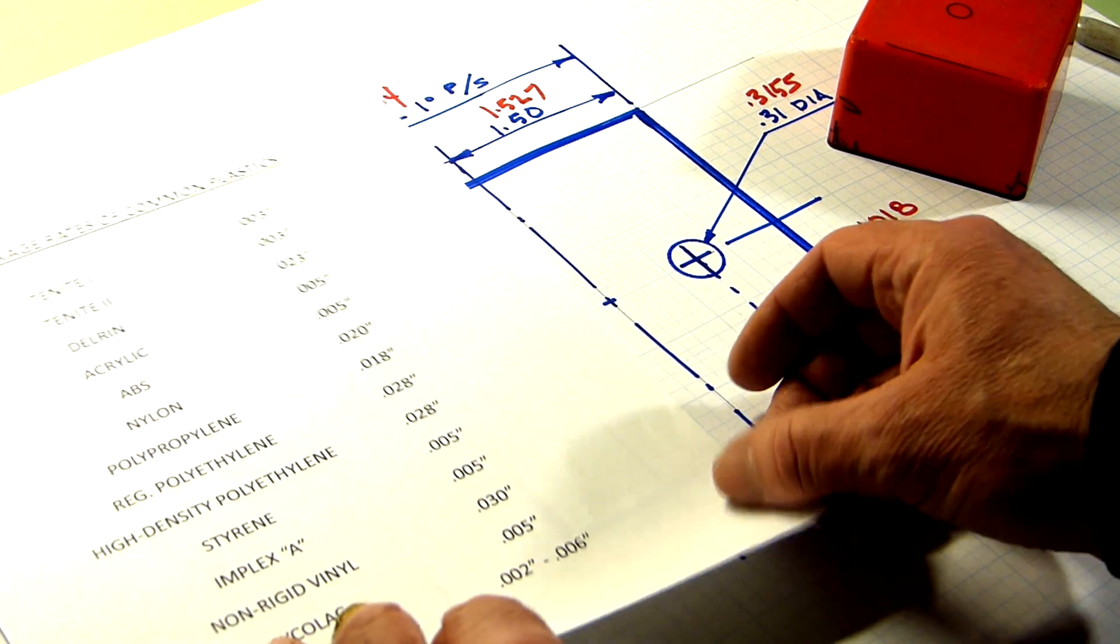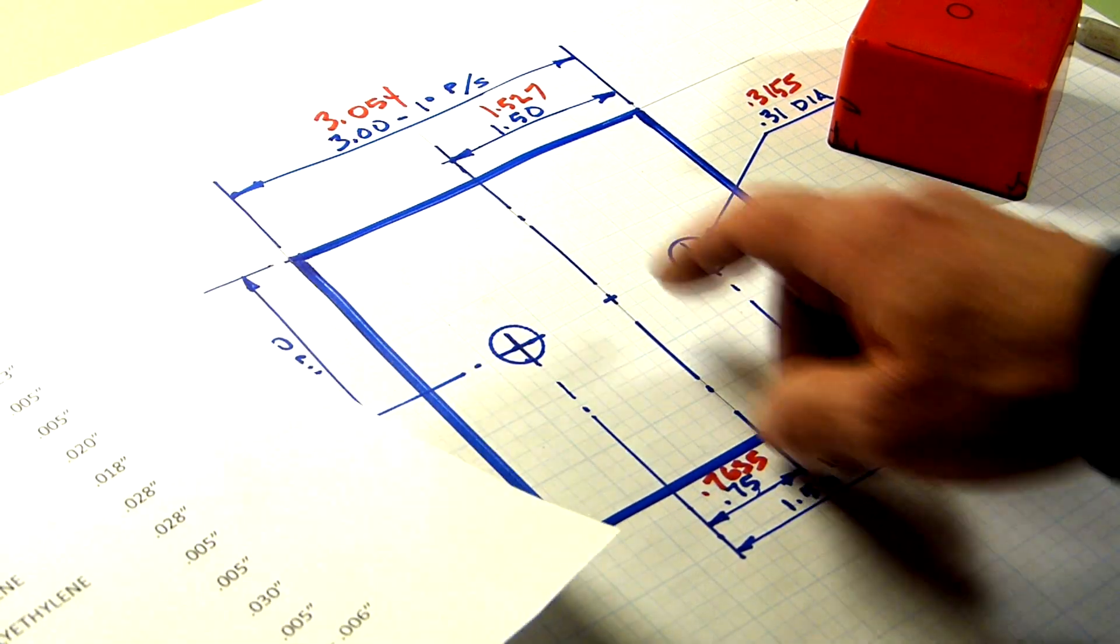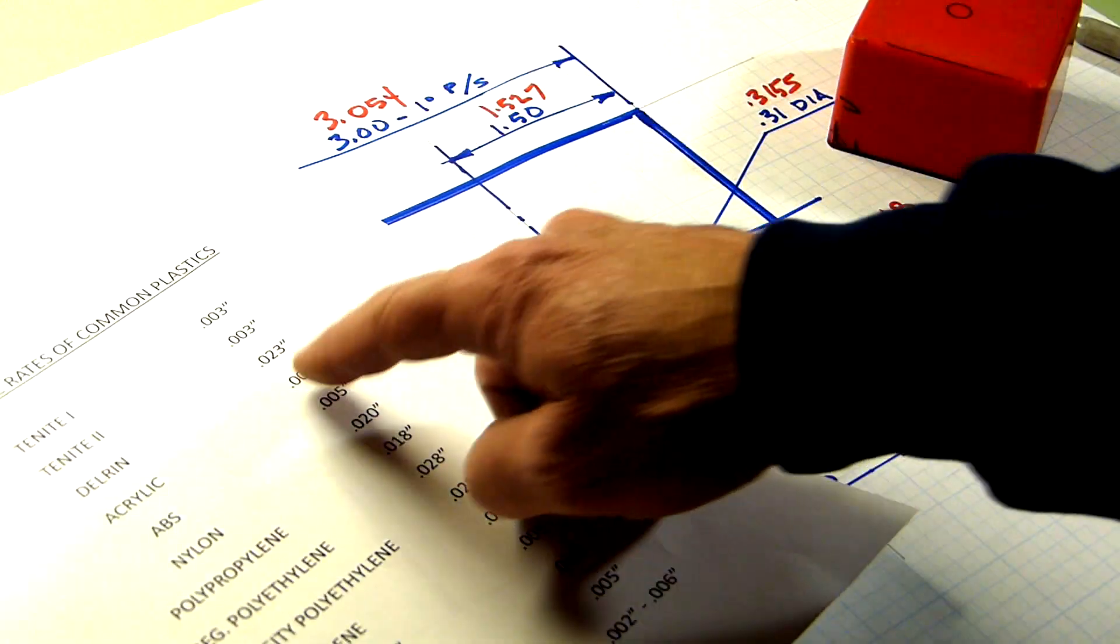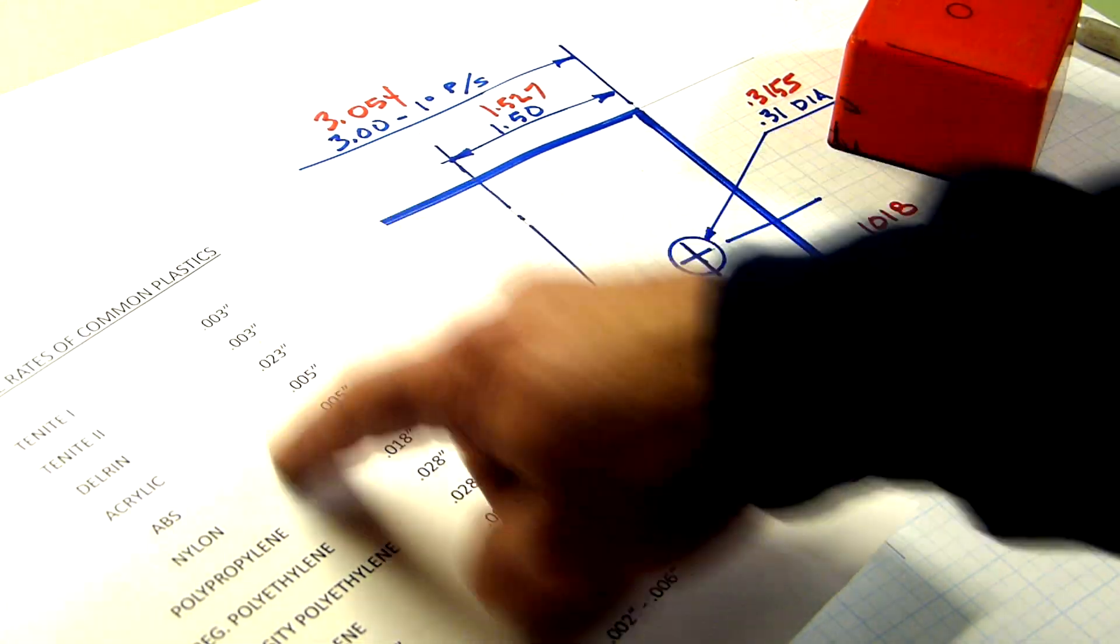So again, polypropylene is 18,000, so you multiply every dimension by 1.018. If it was acrylic, it would be 1.005 and so on.